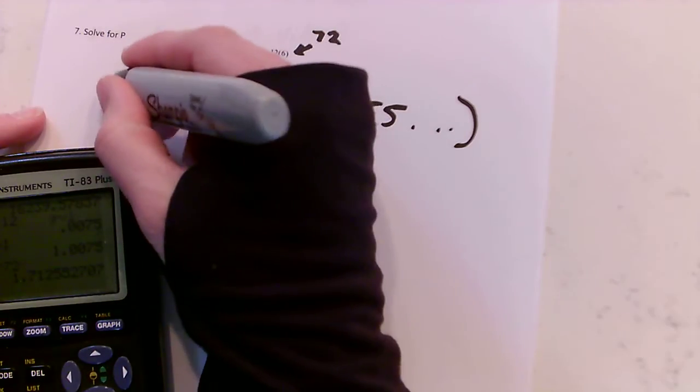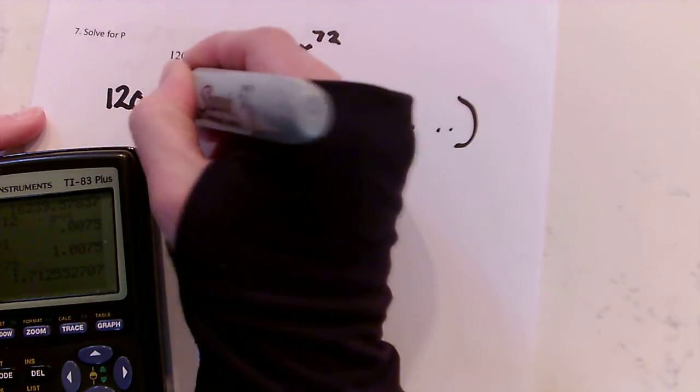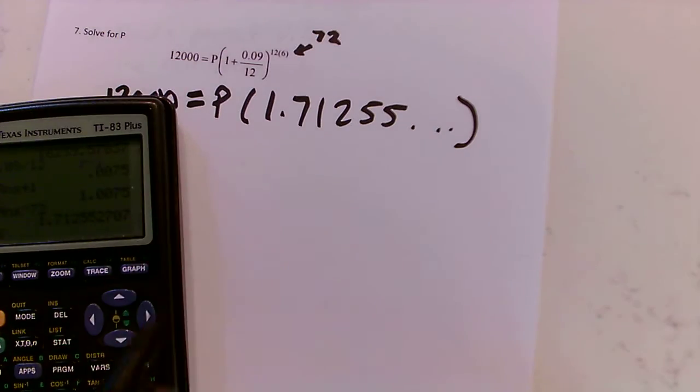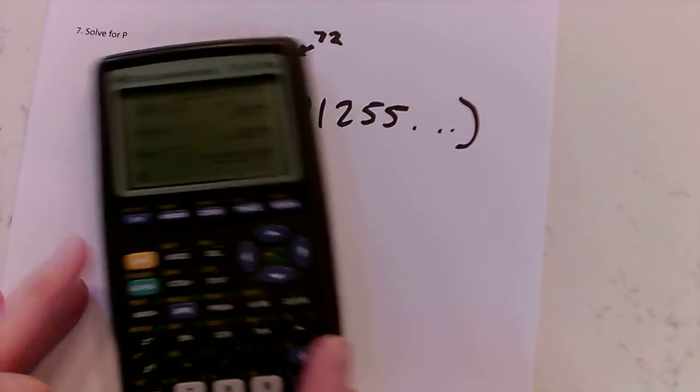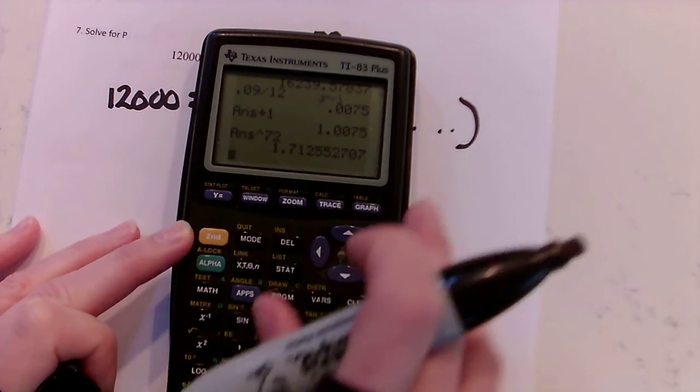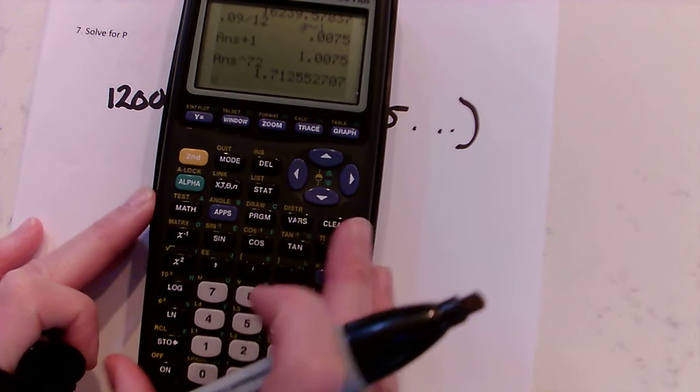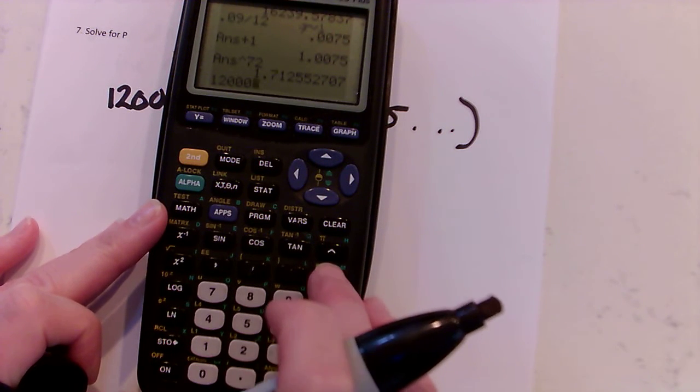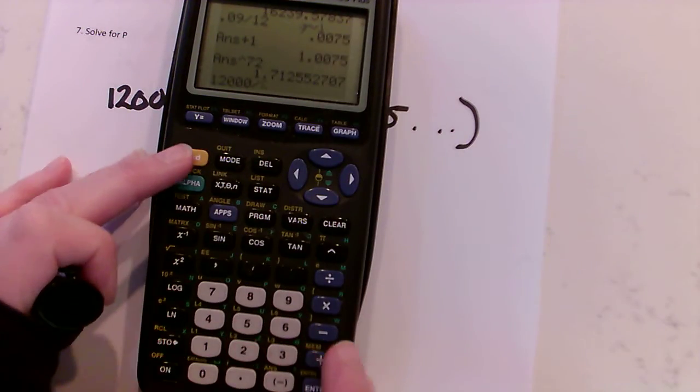Equal to... okay, so I want to have 12,000 in my calculator and I want to then divide by this number. So how am I going to do that? I'm going to type in 12,000, and I'm dividing by this whole expansion.